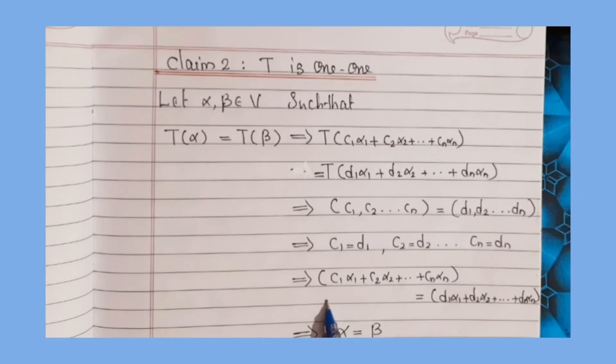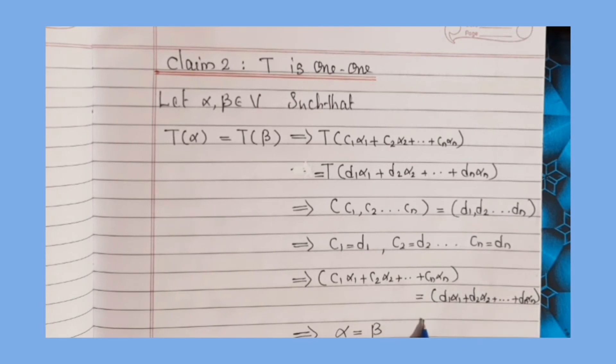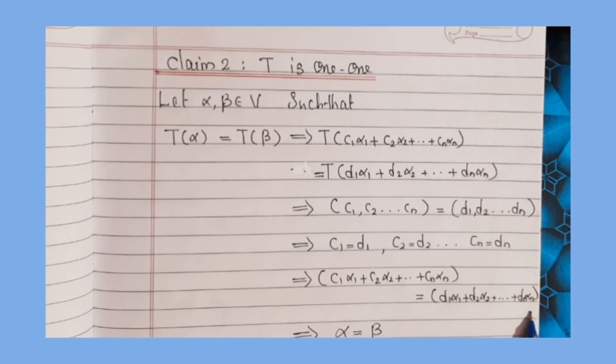That implies c₁α₁ + c₂α₂ + ... + cₙαₙ = d₁α₁ + d₂α₂ + ... + dₙαₙ, which means α = β. Therefore T is one-to-one.